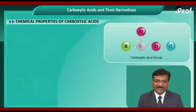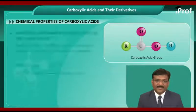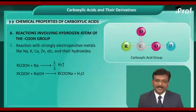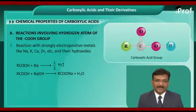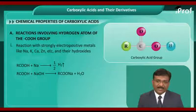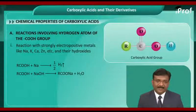Chemical properties of carboxylic acids. We will look at reactions involving the hydrogen atom of the COOH group, that is the carboxylic group. The first reaction is the reaction of carboxylic acid with strongly electropositive metals like sodium, potassium, calcium, zinc, etc.